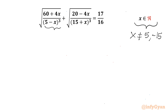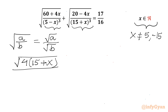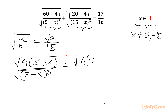Denominator cannot be 0. Now I will write one property from radicals: square root of (a over b) can be written as square root a divided by square root b. Let us apply. So I will be writing square root of (60 plus 4x). Let us take 4 common, so in bracket (15 plus x), divided by square root of (5 minus x) whole cube. Plus square root of 4 times (5 minus x), divided by square root of (15 plus x) whole cube.